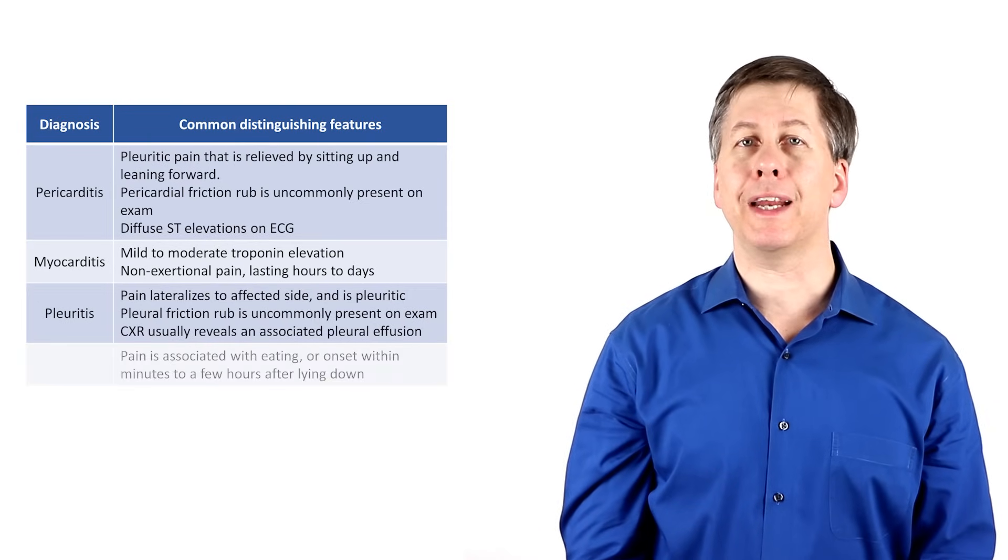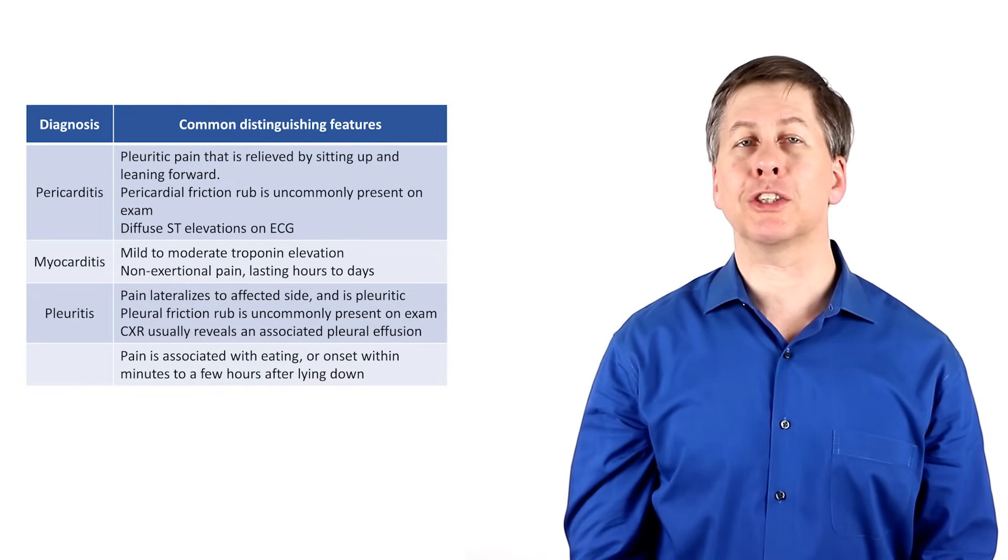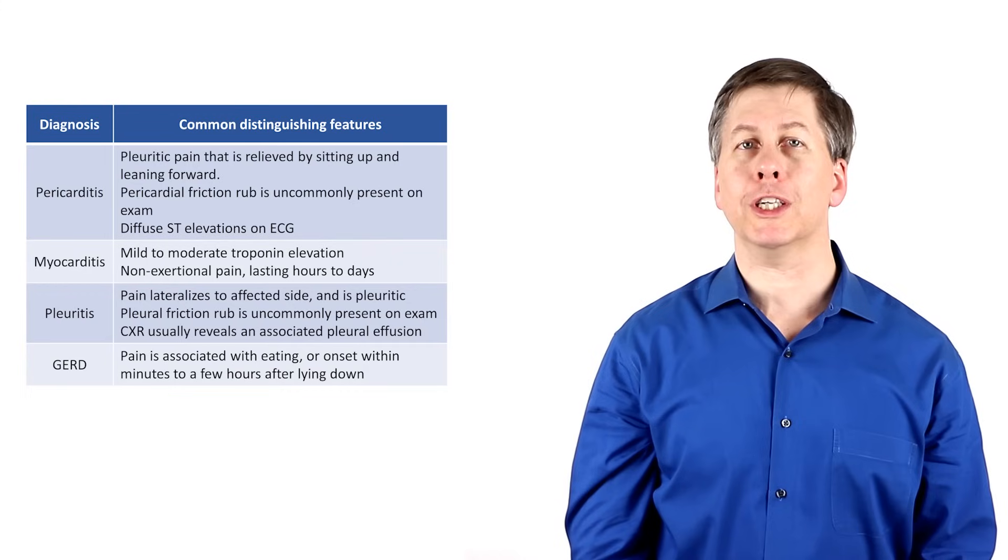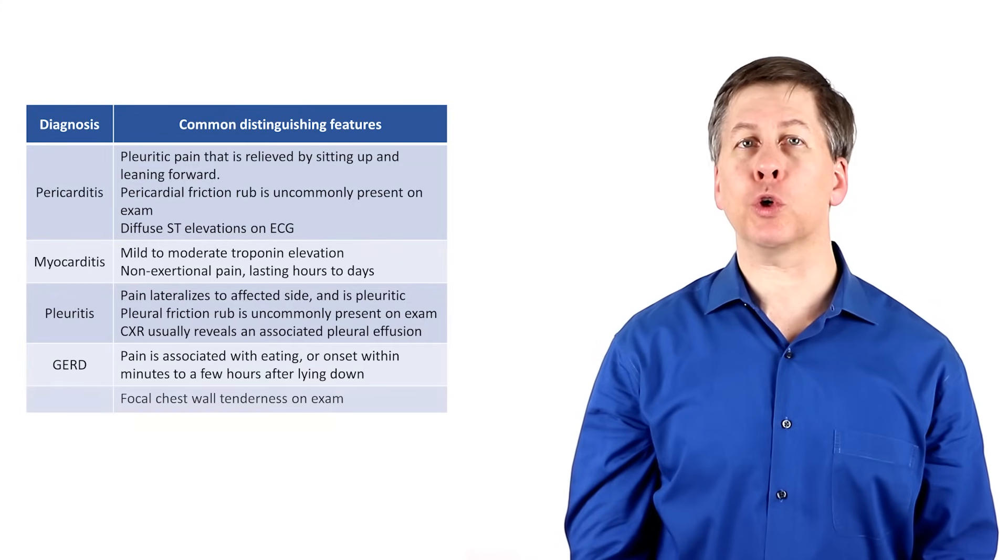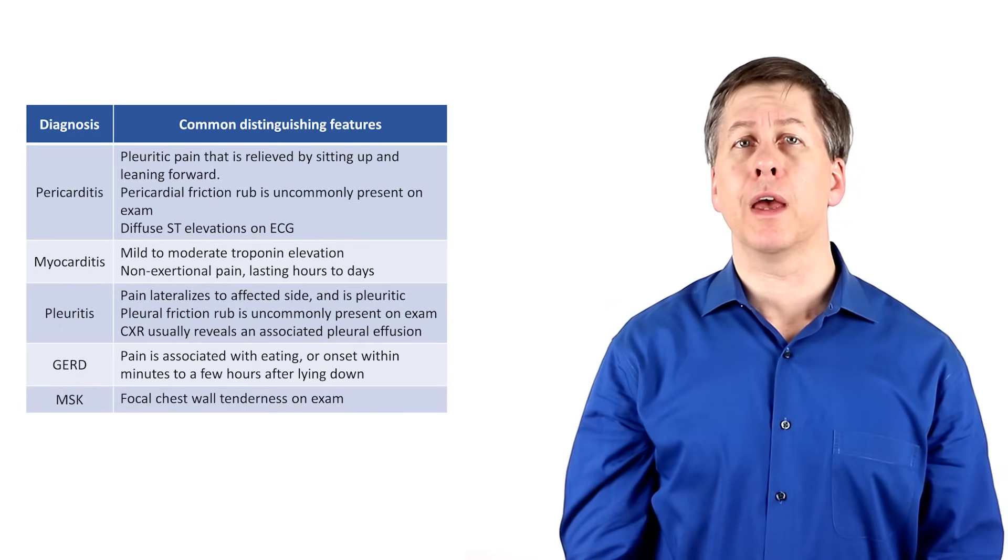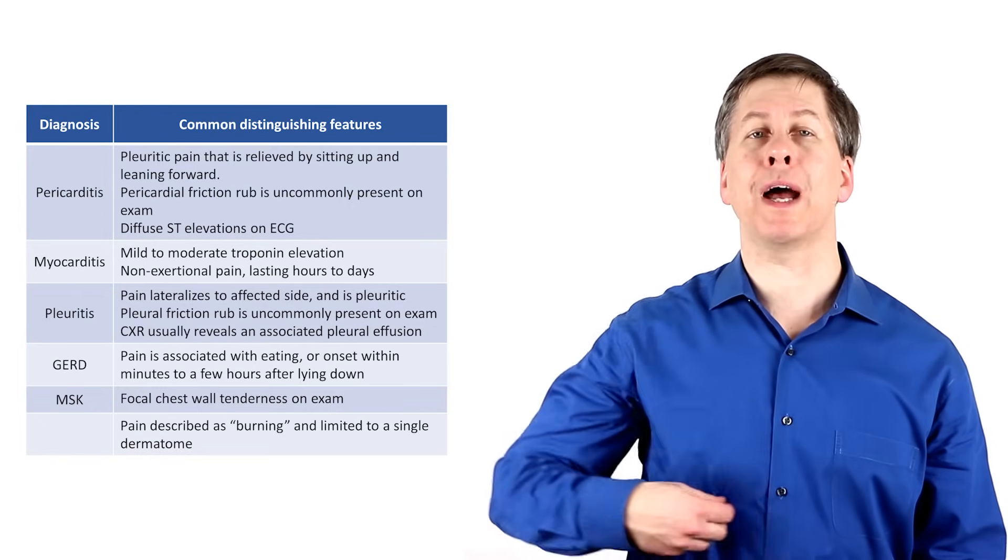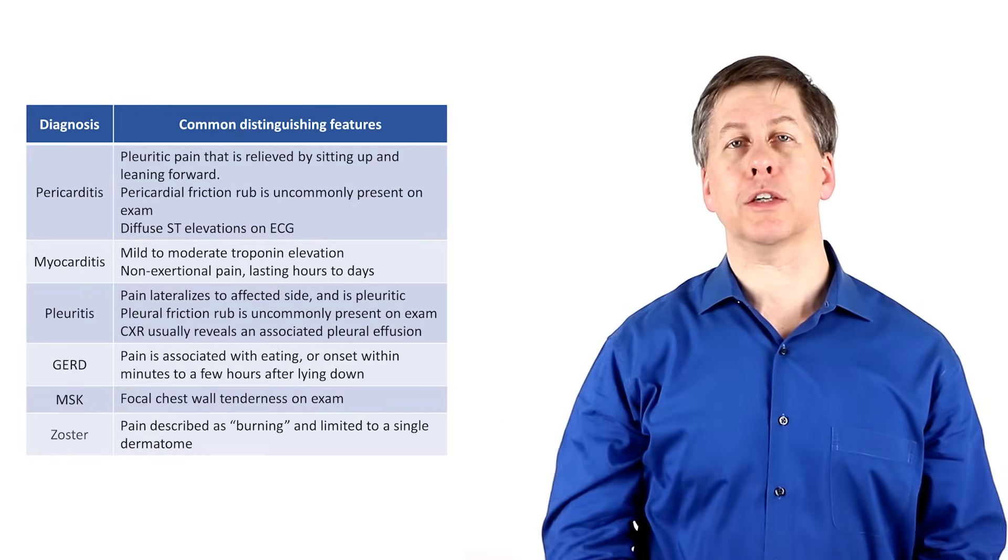Chest pain that is related to eating, or which comes on minutes to a few hours after lying down, is suggestive of GERD. Chest pain that is associated with very focal chest wall tenderness suggests an MSK origin. And pain that is described as burning, and which is limited to a single dermatome that wraps around to the back, suggests zoster.